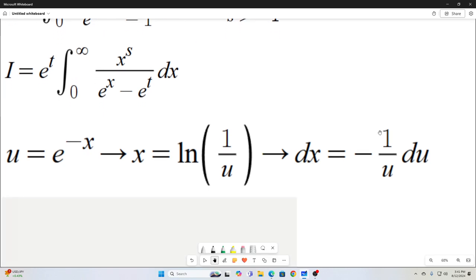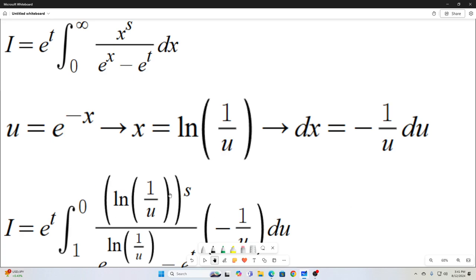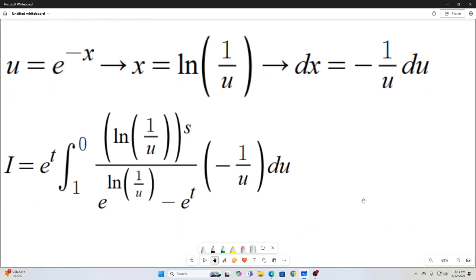So that is going to transform our integral like this. The bounds will change. Basically, I just plugged in what we know u is equal to e to the negative x. So e to the negative infinity is zero, e to the negative zero is one. And then I literally just replaced x with what we know it is from our substitution, which is natural log of one over u.